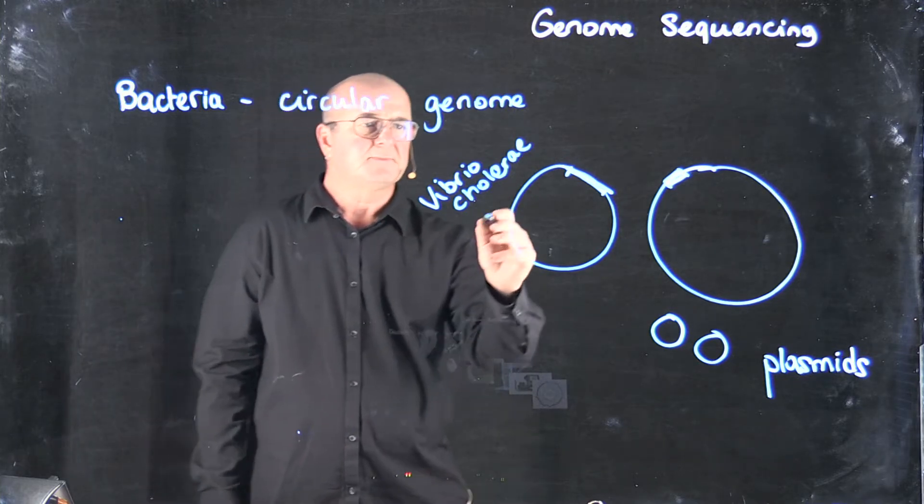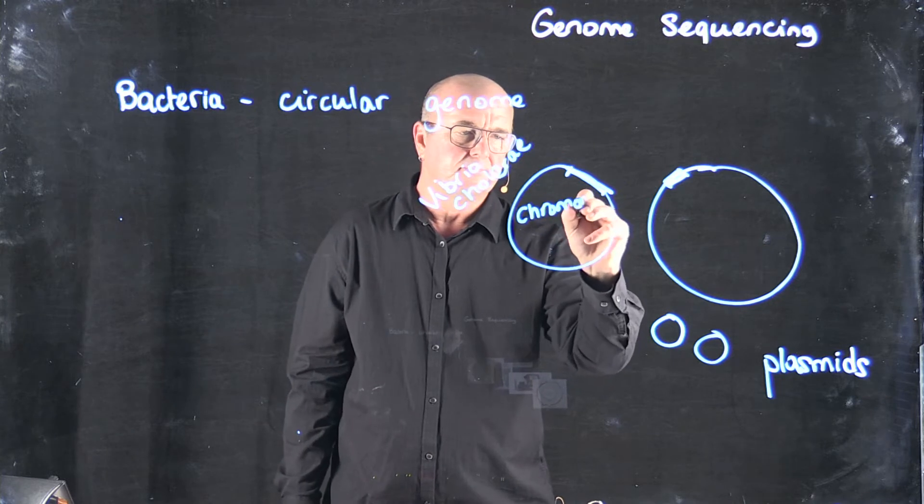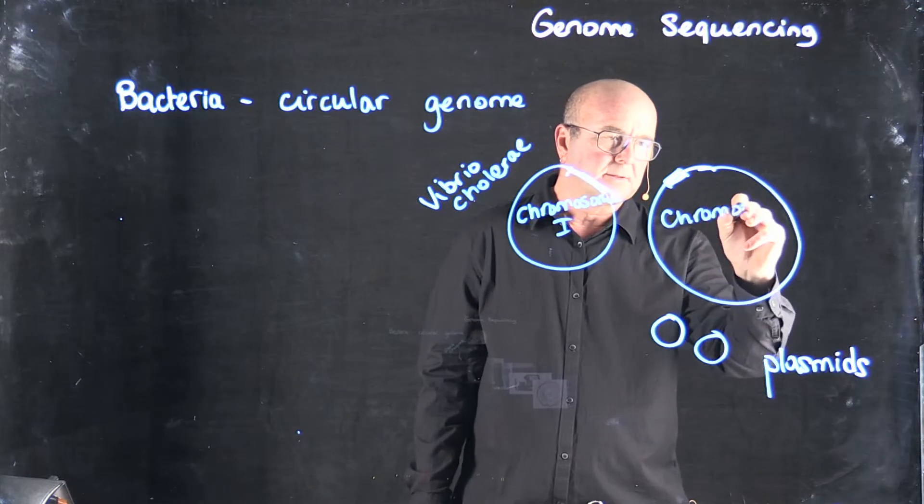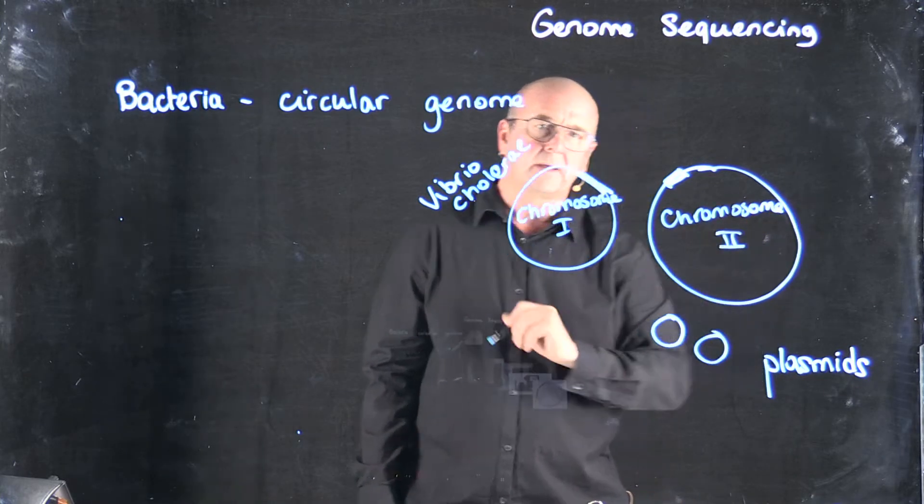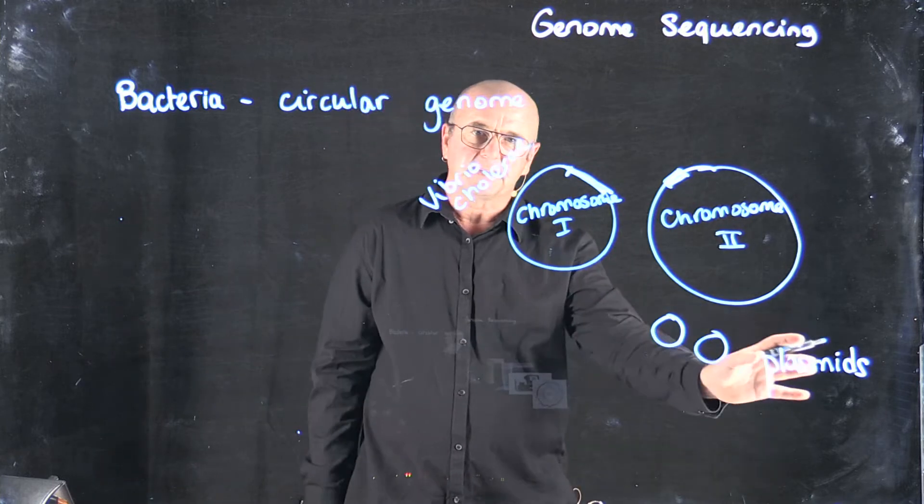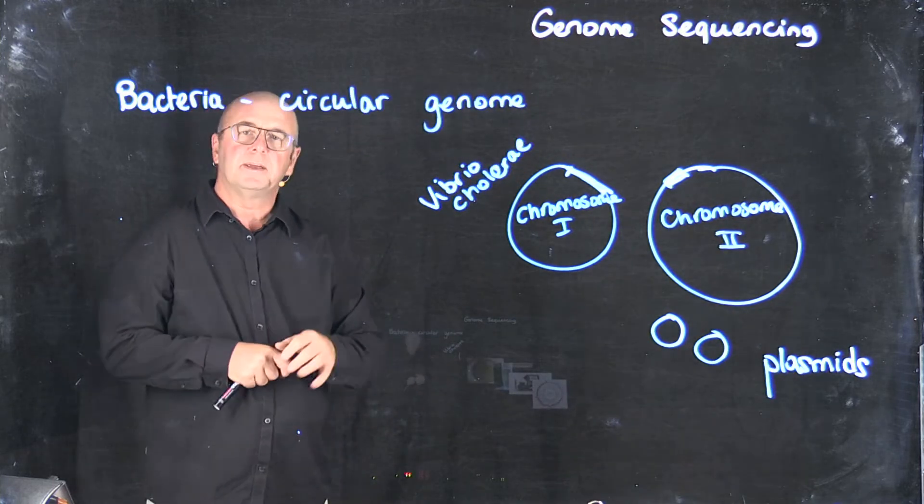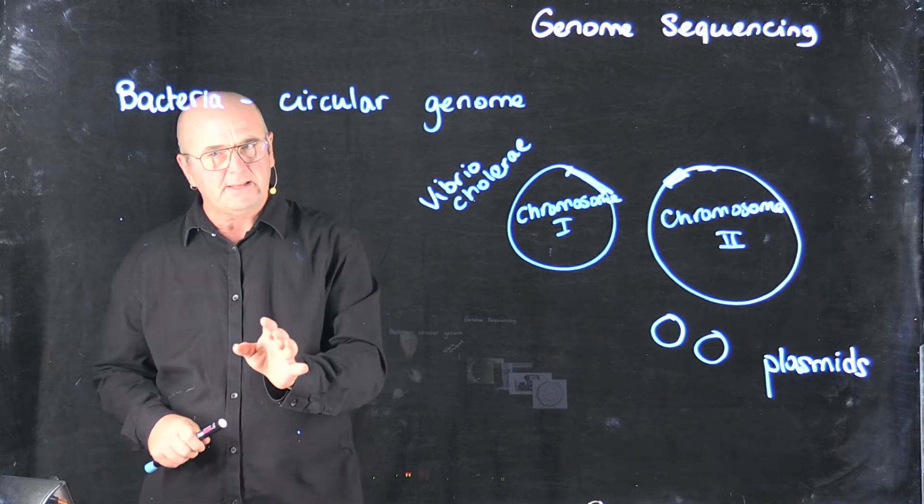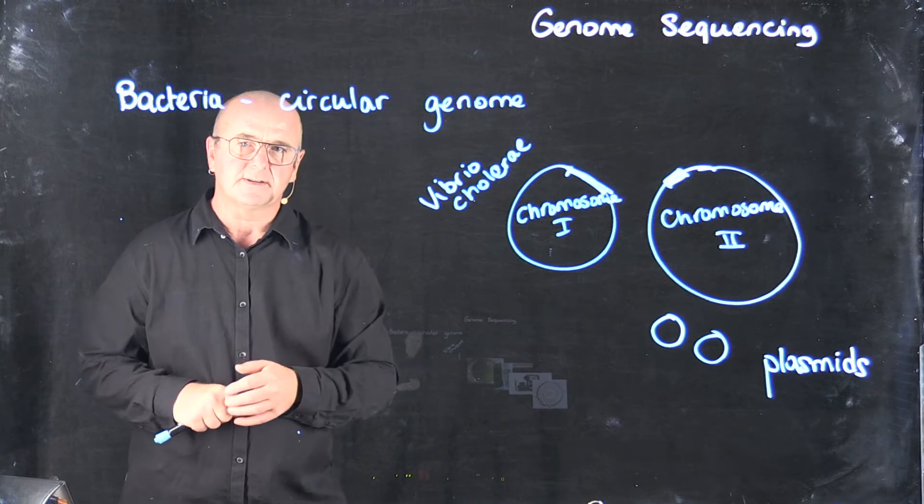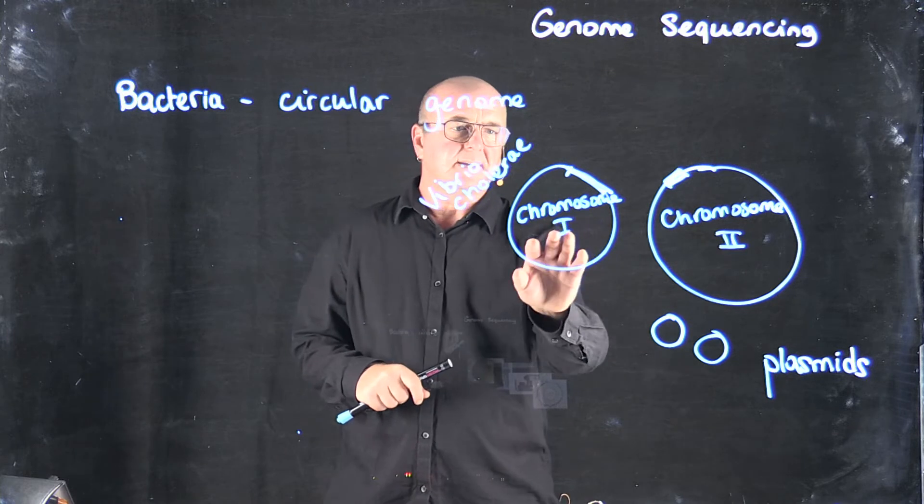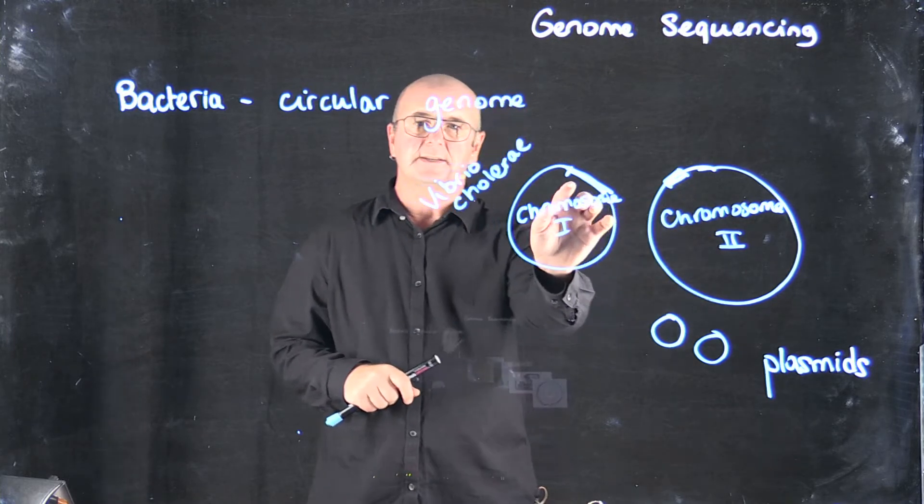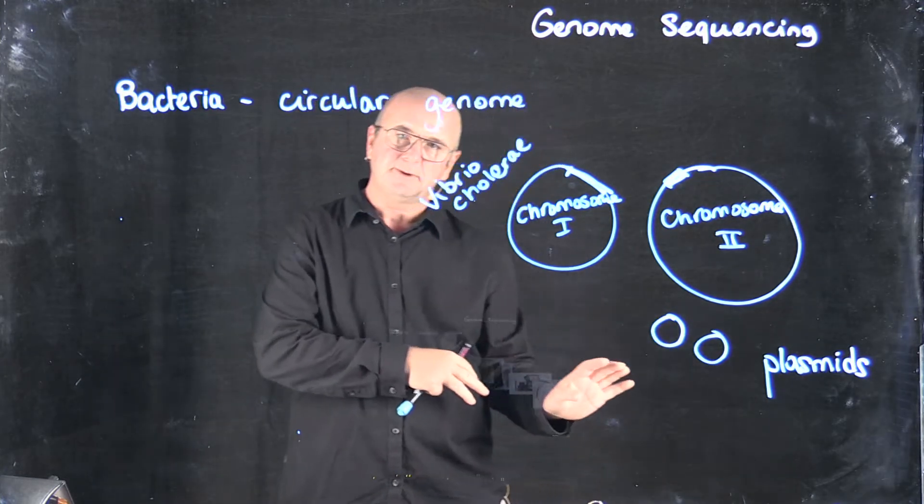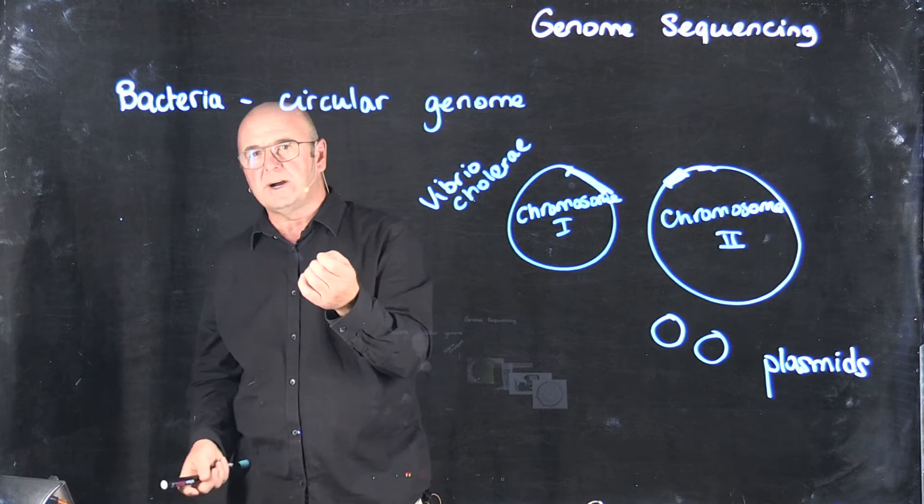So the difference between a chromosome and a plasmid is that plasmids can largely be removed from the cell without any effect on growth of the cell. It depends exactly how you measure that, what conditions you're using, and so on. But we consider the chromosome to contain essential genes that are required for growth, and plasmids to contain largely disposable genes, maybe accessory genes, that are only required in some conditions.